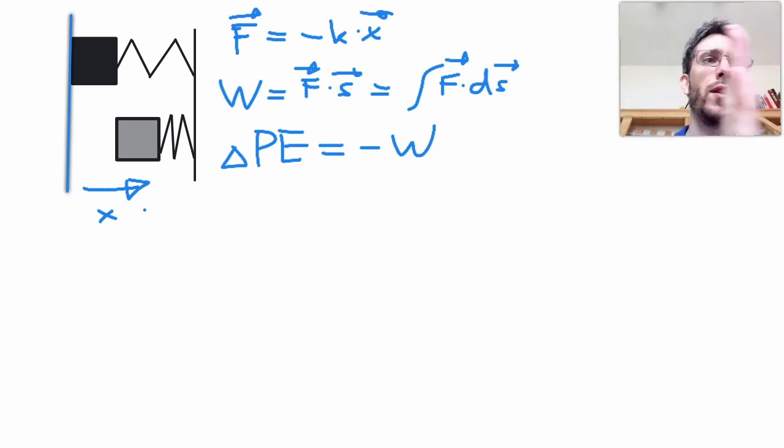Also it doesn't matter how I compress from here to here. If I go here, here and move a bit around in between it doesn't matter, it's path independent. It only depends on the final and the initial position.